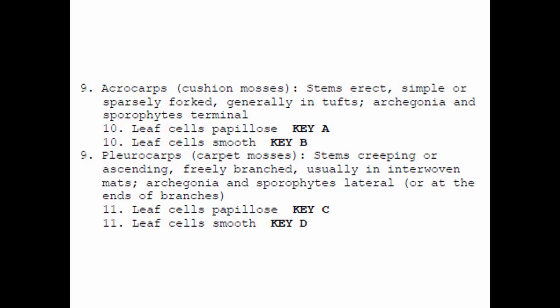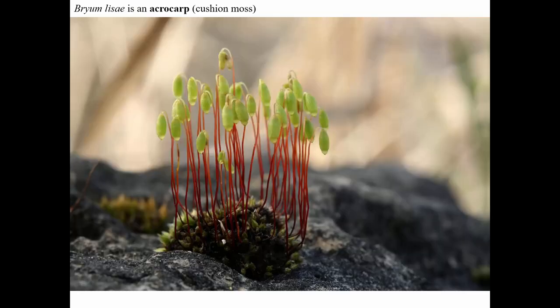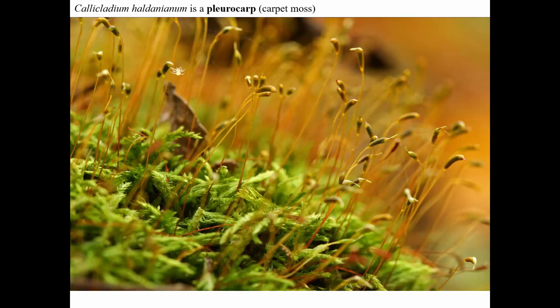Let's take a look at some features that generally vary among these more ordinary mosses. Two growth forms: acrocarps are upright, with stems typically side by side and sporophytes at the very tip. Pleurocarps lay more or less flat — sprawling and branched — and their sporophytes come from short side branches. They're sometimes called cushion mosses and carpet mosses respectively. Here's an example of an acrocarp, and here's an example of a pleurocarp.